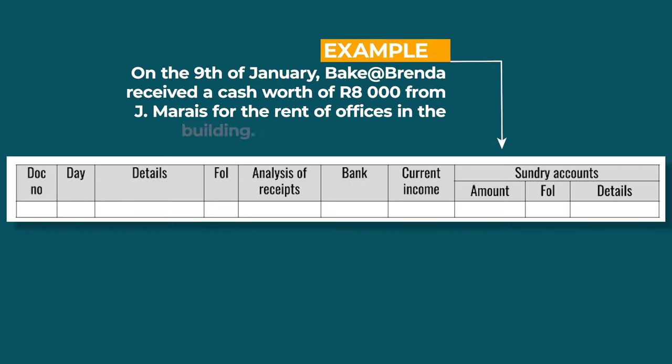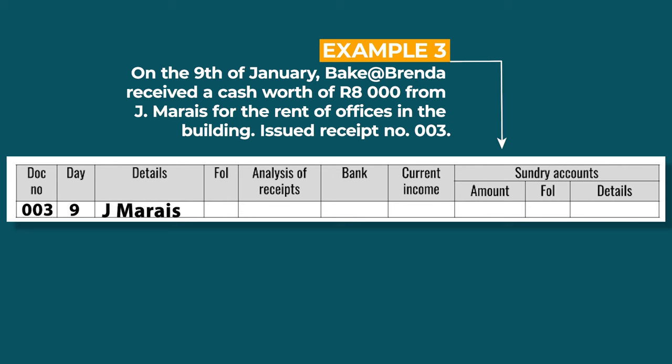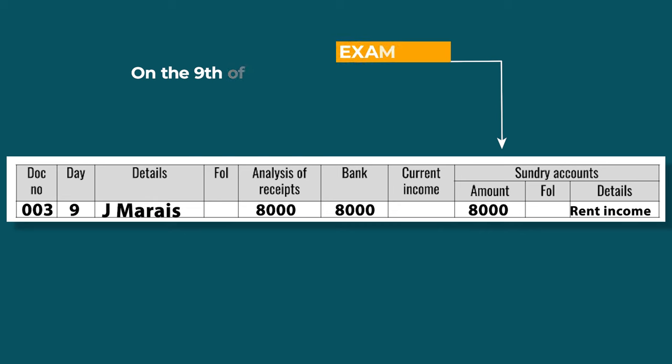Time is up — let's see if you've got the correct answer. The document number is 003 and the day is the 9th. You should record the 8,000 rand in the analysis of receipt, bank, and sundry accounts columns. Well done, Grade 8.